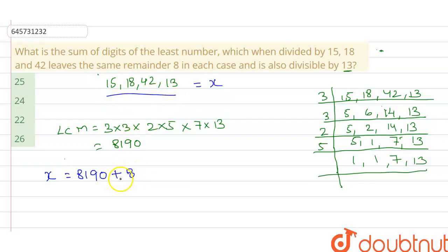8,190 plus 8 equals 8,198. Now the sum of all digits of X is equal to 8 plus 1 plus 9 plus 8, that is equal to 16 plus 10, which is 26. So our correct option is 26.